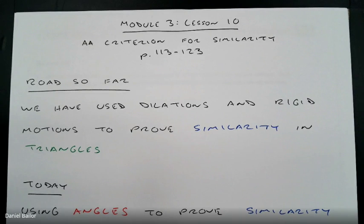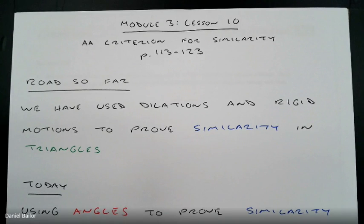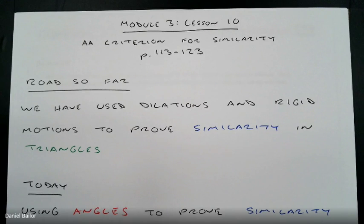Please start copying down the notes right now as I'm talking about them. We've been talking about similarity the past few lessons, and in Lessons 8 and 9 we've been using dilations and rigid motions to prove similarity in triangles. Today we're specifically talking about triangles and another way to prove similarity where you do not have to use rigid motions or dilations.